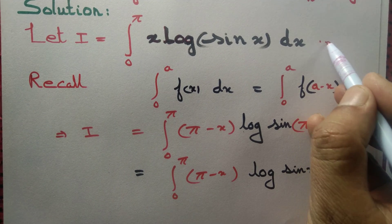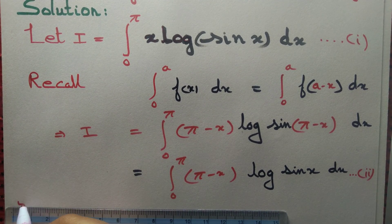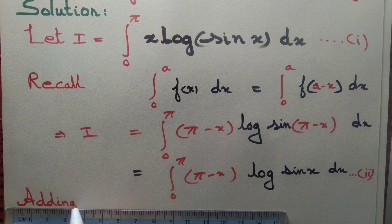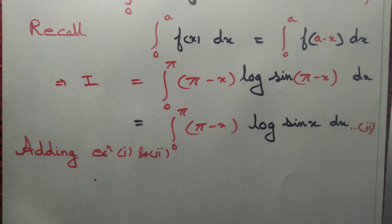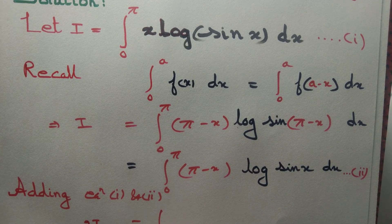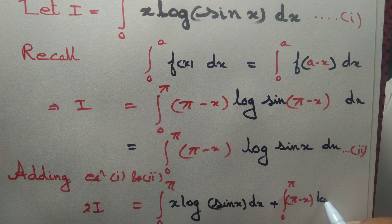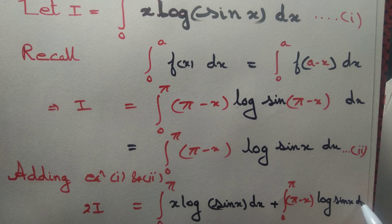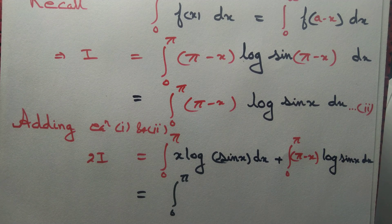Let us write the original as equation 1 and this new form as equation 2. Adding equations 1 and 2: I + I = 2I on the left-hand side. On the right-hand side we have the integral from 0 to π of x·log(sin x) plus the integral from 0 to π of (π - x)·log(sin x). Observe that x·log(sin x) and -x·log(sin x) cancel, so we are left with simply the integral from 0 to π of π·log(sin x).